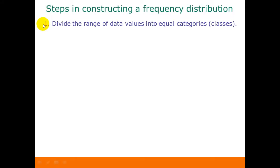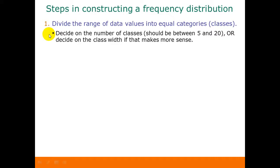If we want to construct a frequency distribution, the first step is to divide the range of data values into equal categories — those are our classes. This is the most complicated part. We can either decide how many classes we want to have — and the number of classes should be somewhere between 5 and 20, because less than 5 is too few and more than 20 is just too many — or we can decide on the class width, whichever one makes more sense with our data.